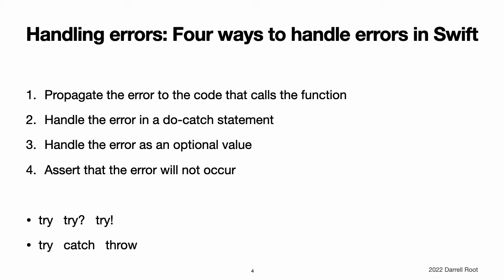When a function throws an error, it changes the flow of your program, so it is important that you can quickly identify places in your code that can throw errors. To identify these places in your code, write the try keyword, or the try? or try! variations, before a piece of code that calls a function, method, or initializer that can throw an error. These keywords are described in the later sections.